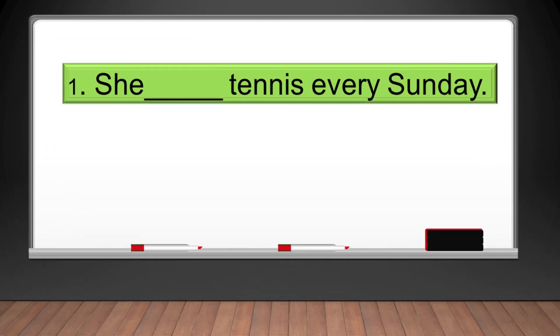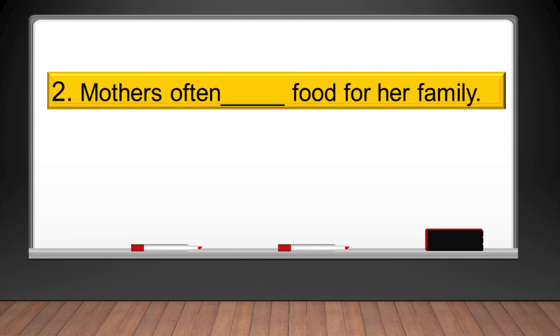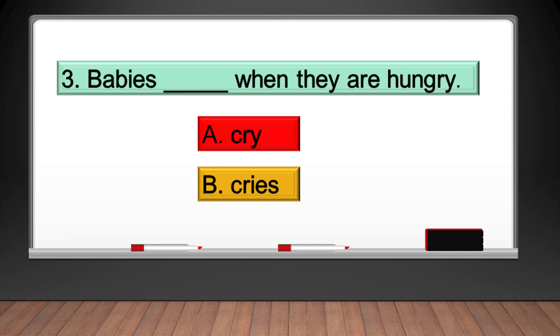Number one: She blank tennis every Sunday. A: play, B: plays. Your answer must be plays. Two: Mothers often blank food for her family. A: cook, B: cooks. Your answer must be cook. Three: Babies often blank when they are hungry. A: cry, B: cries. Your answer must be cry.